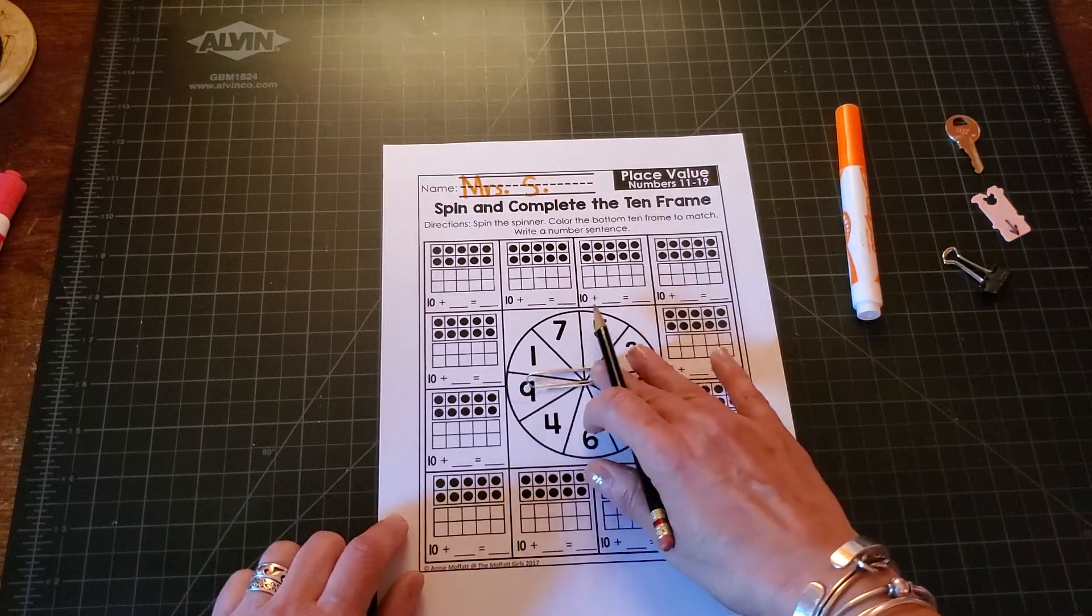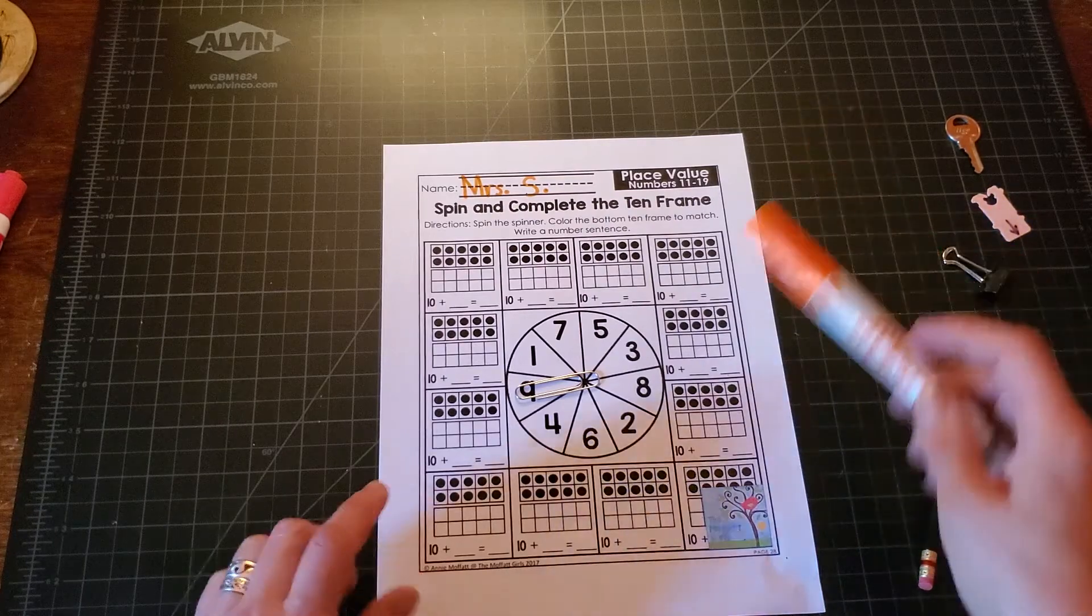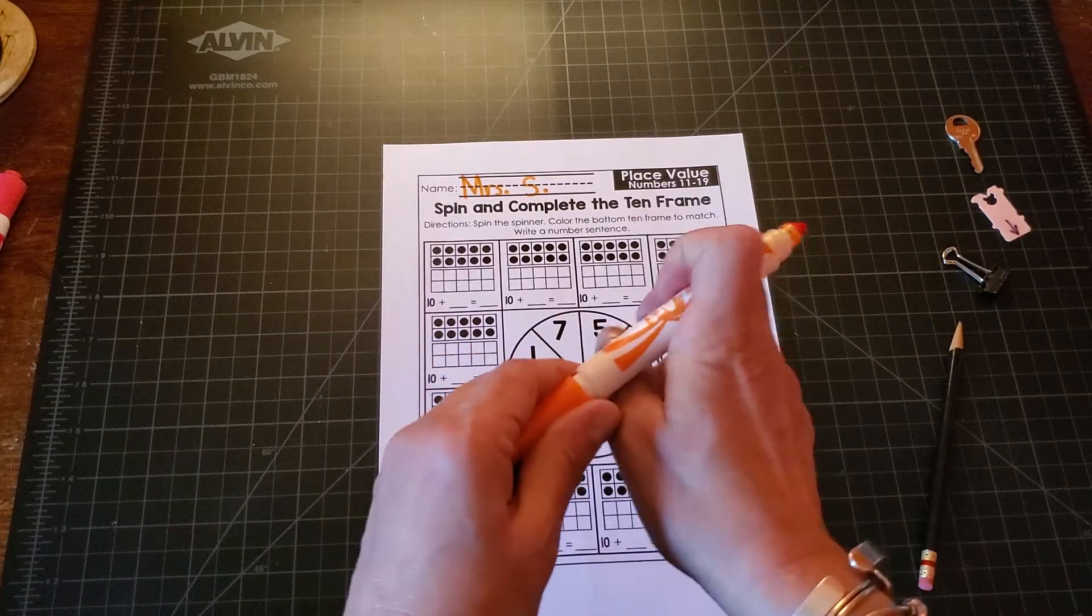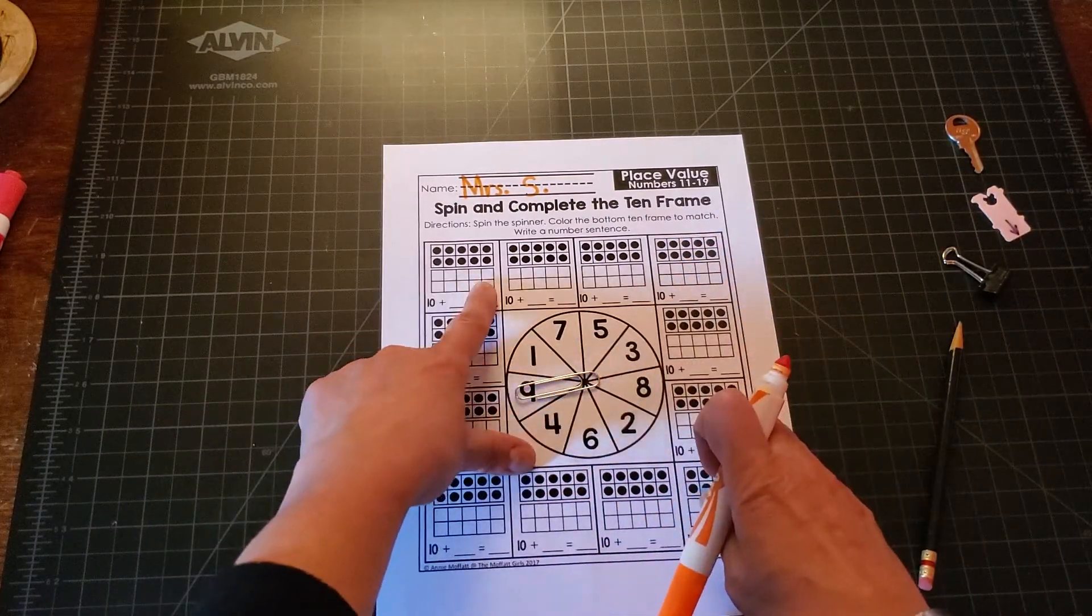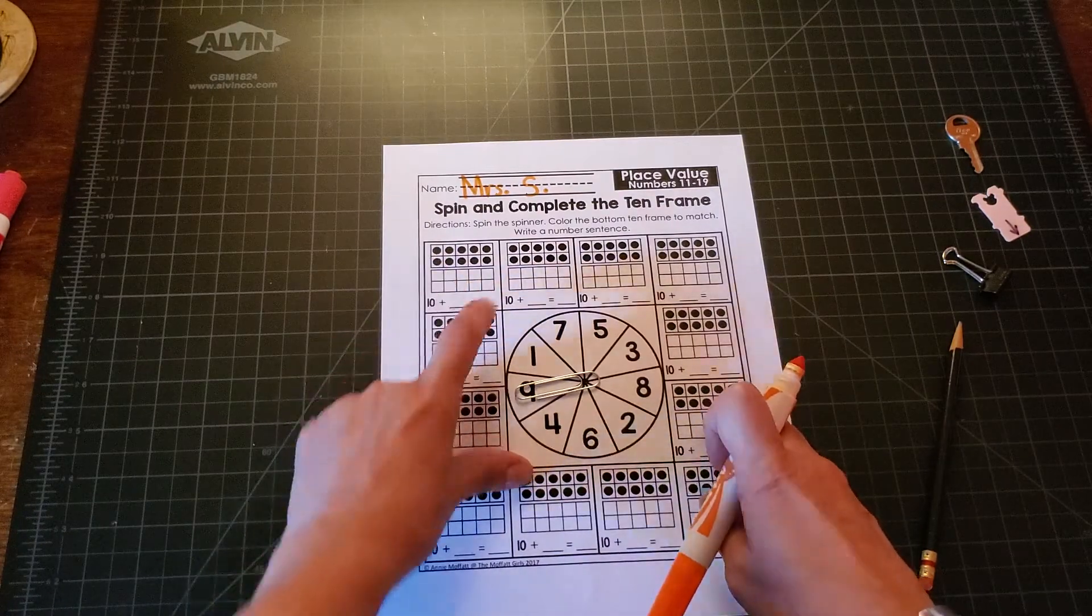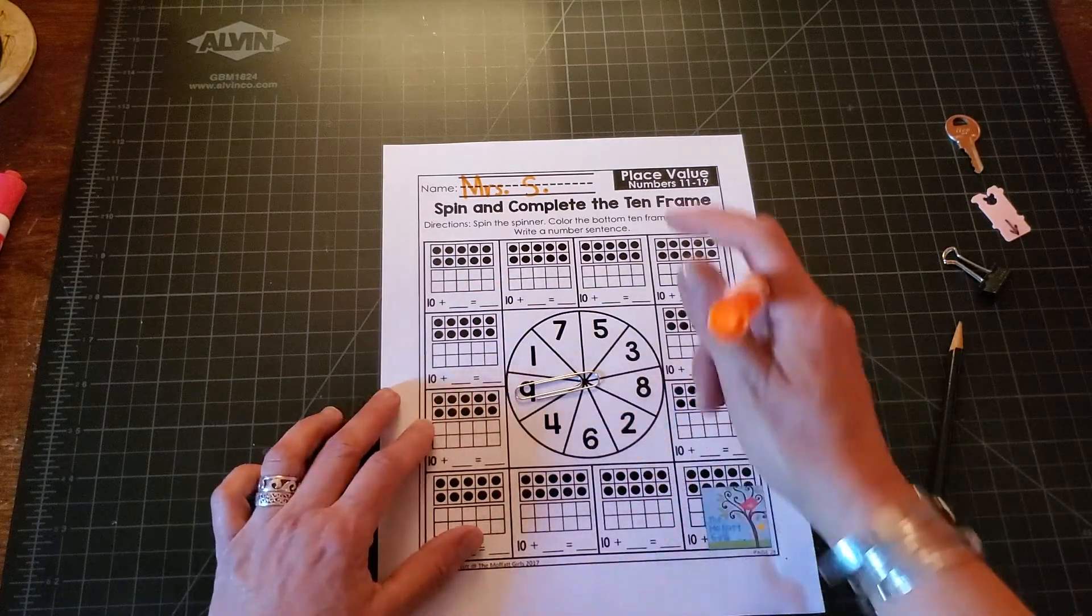Okay so I'll start by spinning. Make my spinner and spin. Okay I got nine. For my first one I'm going to make nine more because we have our ten and we need our nine more in the second ten frame.